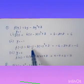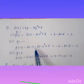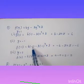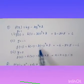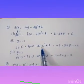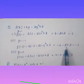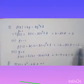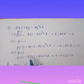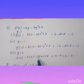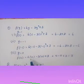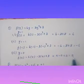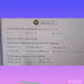For y equals minus 1: f of minus 1 equals 6 into minus 1 minus 3 into minus 1 whole squared plus 3 equals minus 6 minus 3 into 1 plus 3 equals minus 6 minus 3 plus 3 equals minus 6. So the answer becomes minus 6.